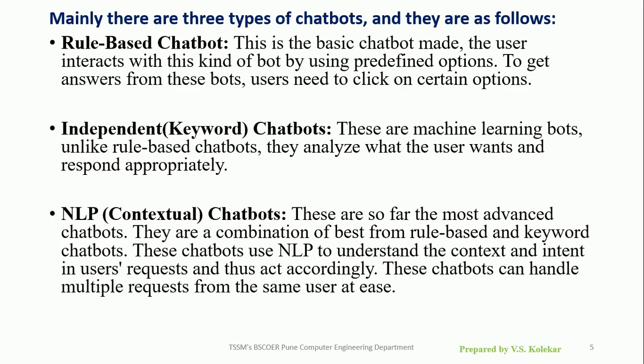There are mainly three types of chatbots. First, rule-based chatbots — this is the basic chatbot where users interact by using predefined options; to get an answer, users need to click on certain options. Second, independent or keyword chatbots — these are machine learning bots that, unlike rule-based chatbots, analyze what the user wants and respond appropriately. Third, natural language processing or contextual chatbots — these are the most advanced chatbots, combining rule-based and keyword-based approaches. They use NLP to understand the context and intent in a user's request and can handle multiple requests from the same user.